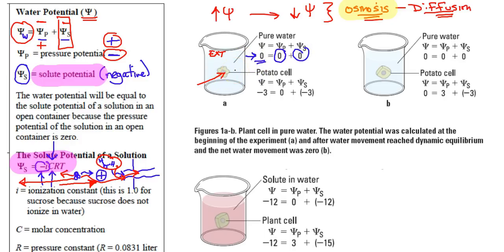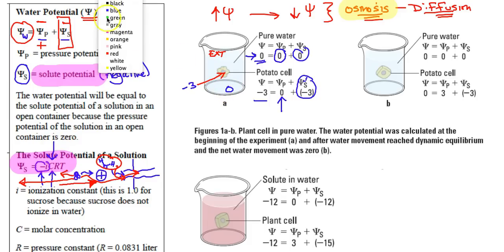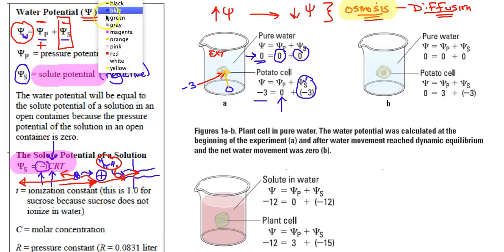In a potato cell — a living cell — it's got enzymes, DNA, and solute particles. Because it has solute particles, it's got a negative factor. With pressure at zero, the overall water potential in the cell is negative three. The water potential outside the cell is zero. Water potential goes from high to low, so water is going to go into the cell, and the cell balloons up.